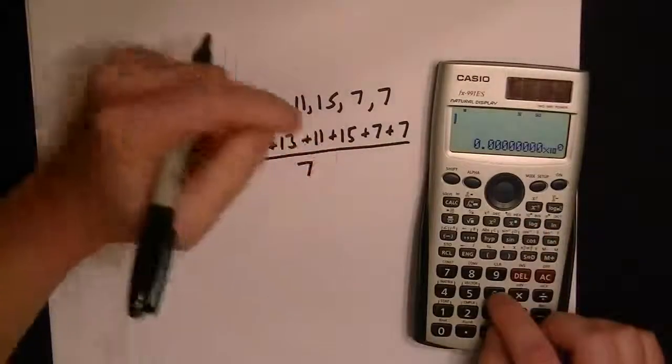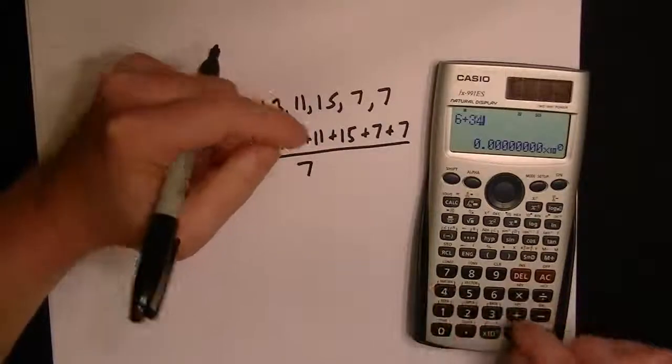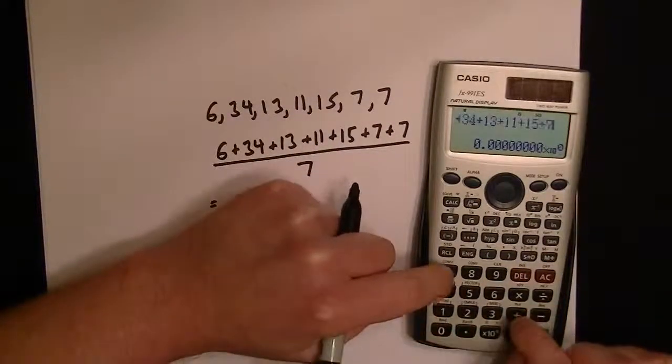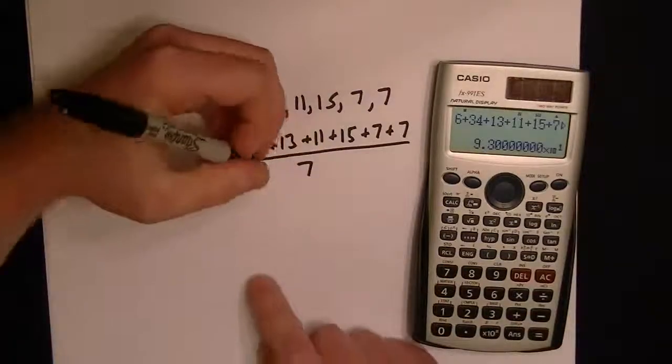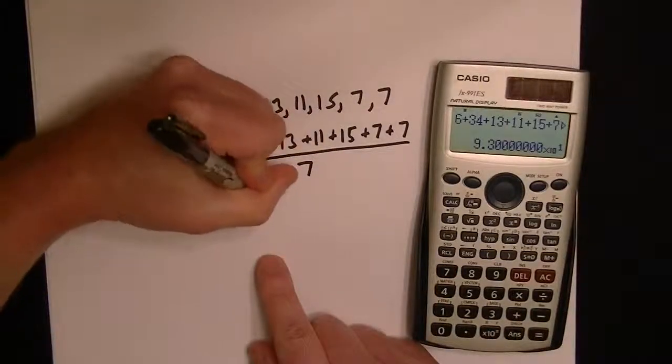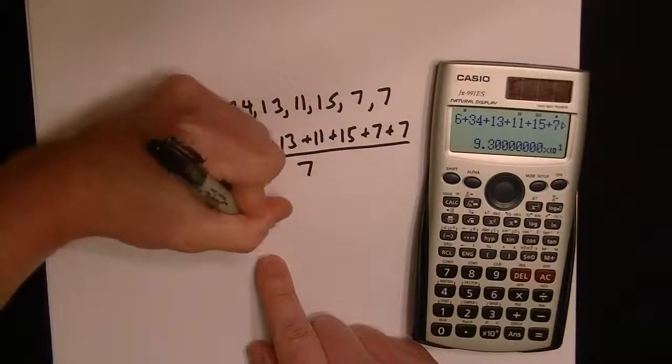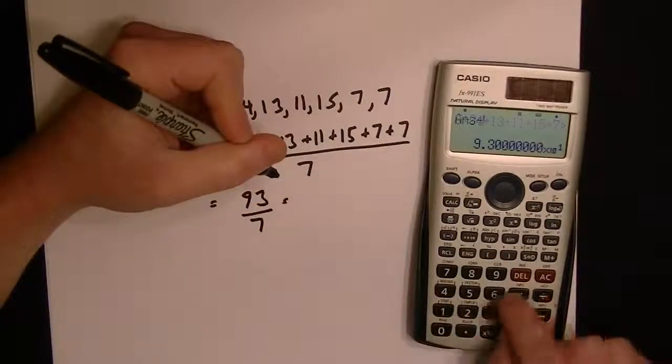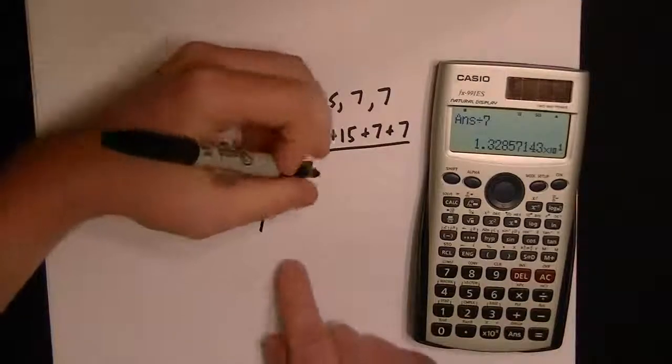Now we do the math: 6 + 34 + 13 + 11 + 15 + 7 + 7. On the top, the total is 93. Then we're dividing by 7, so 93 divided by 7.